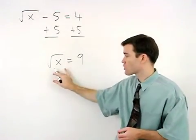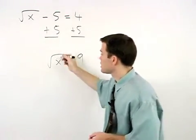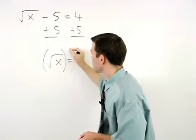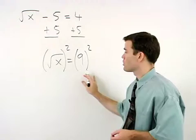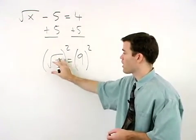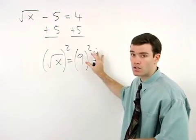Now we can get rid of the square root by simply squaring both sides of the equation. And make sure you write out this step with a parentheses squared on each side.